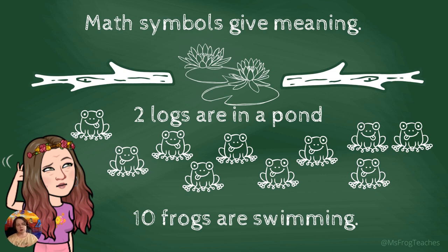Now thinking about—we've talked about addition, we've talked about equals, we've talked about greater than and less than. What do we do if we know we have 10 frogs in a pond, but we only have two logs? What kind of sentence? How do we figure that out?